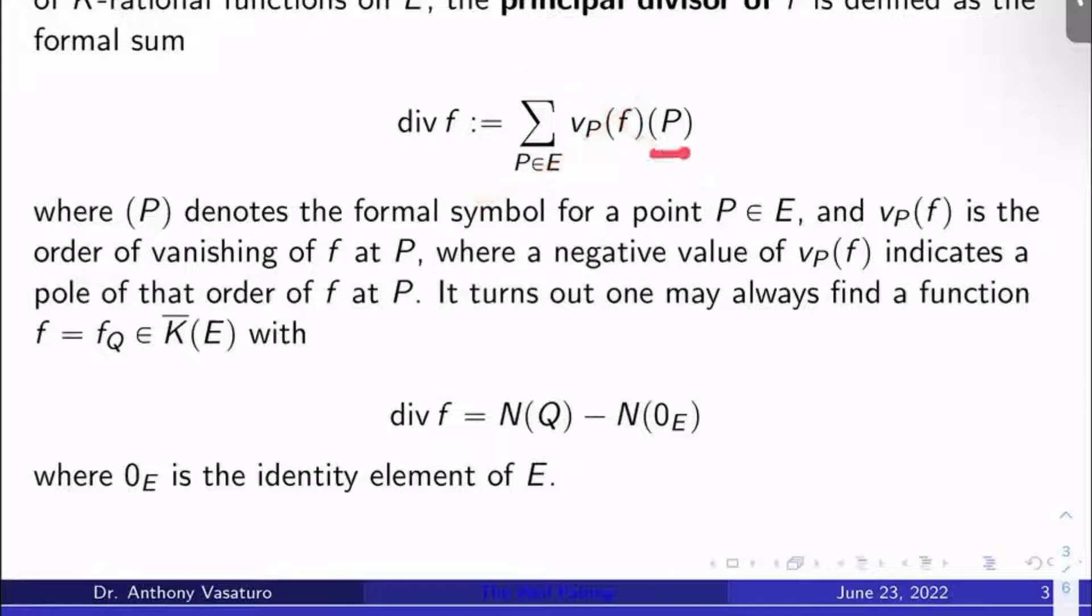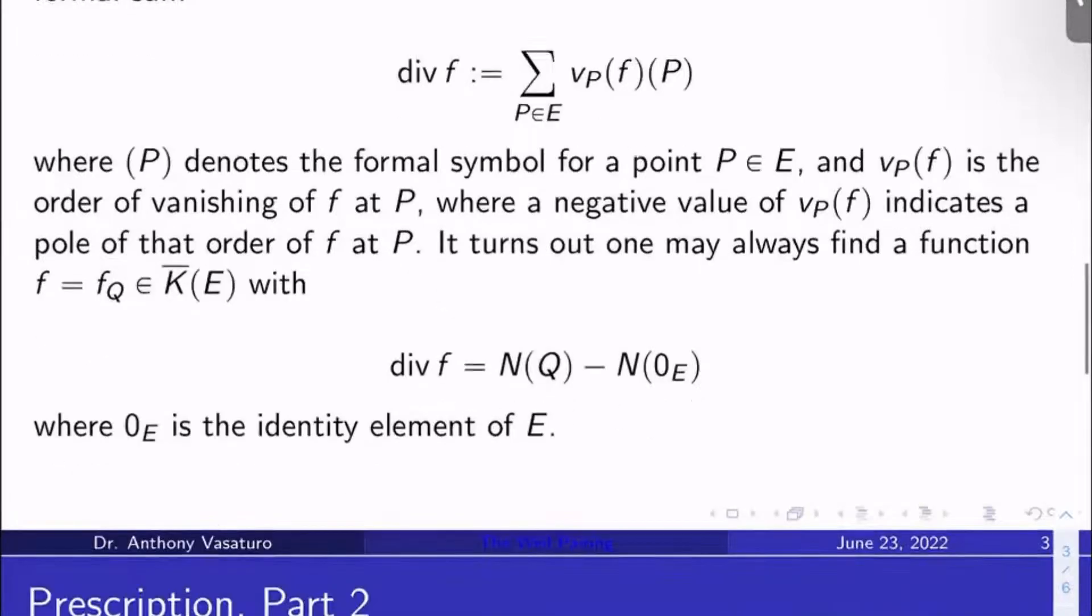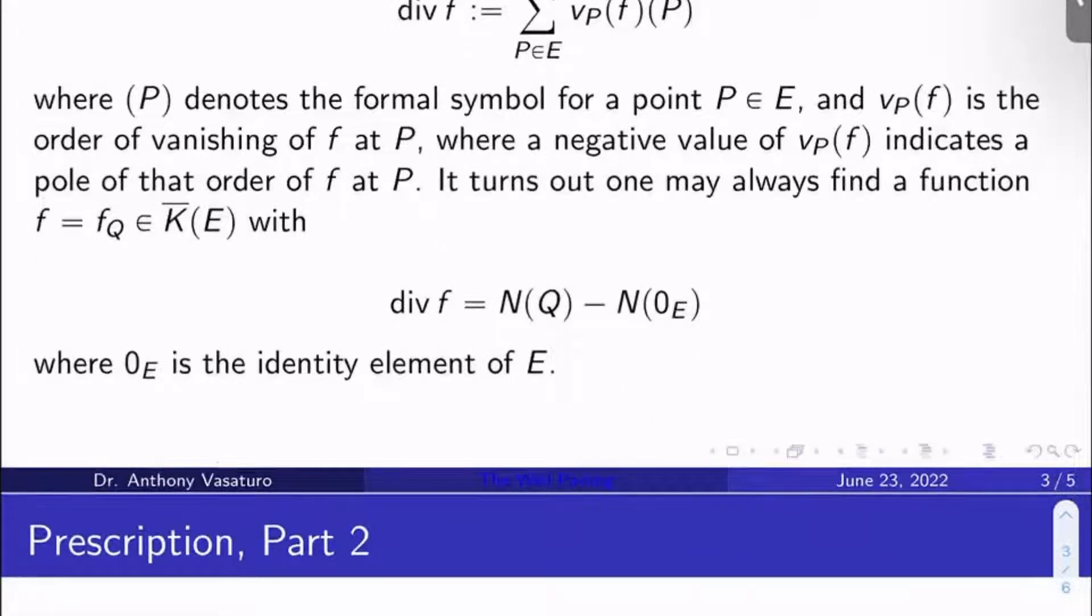v_P(f) is the valuation of f at P. It's the order of vanishing of f at P. And so if f doesn't have a pole or a zero at P, this will just be zero. And so this point basically will not be included in the sum because its coefficient will be zero. And you just have to keep in mind that a negative value of v_P(f) indicates a pole to that order of f at P.